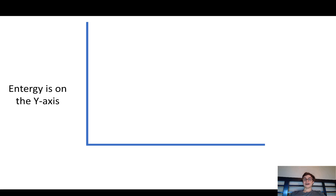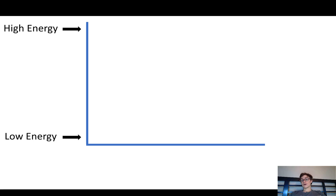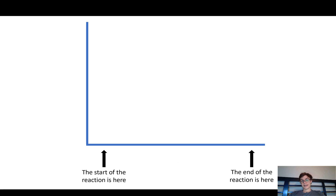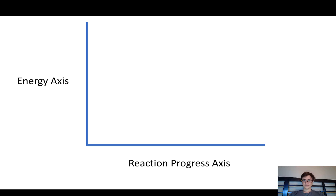Basically, an energy diagram is a graph. On the y-axis we have the energy that a chemical has inside of it — low energy at the bottom and high energy at the top. On the x-axis we have the reaction progress, which means when you start the reaction you're on the left, and when you end the reaction you're on the right. You can think of it as time, though it's not exactly the same.